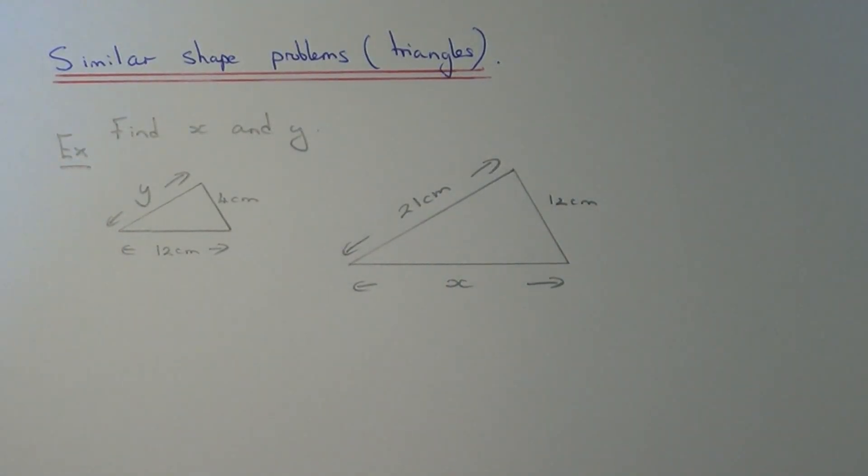Today I'm going to show you how to work out missing sides of two similar triangles. So let me just quickly recap what similar shapes are. Similar shapes are basically enlargements and all the corresponding sides of the shapes have been enlarged by the same scale factor.